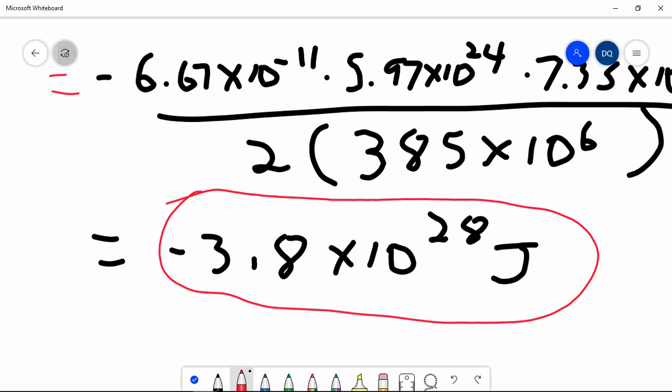Now, remember, if that was as high as zero, that would mean the moon is moving fast enough to escape gravity and get infinitely far away.